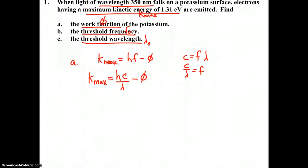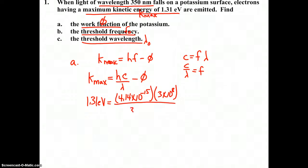They gave us the maximum kinetic energy as 1.31 electron volts. Because of that, we want to use the electron volt second form of Planck's constant, 4.14 times 10 to the negative 15 from the reference table. Speed of light is 3 times 10 to the 8th, and our incident wavelength is 350 nanometers. Solving for phi, we find phi to be 2.24 electron volts.